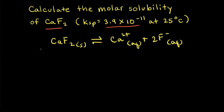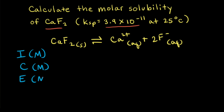The next step is to set up an ICE table, where I stands for initial concentration, C stands for the change in concentration, and E stands for equilibrium concentration.